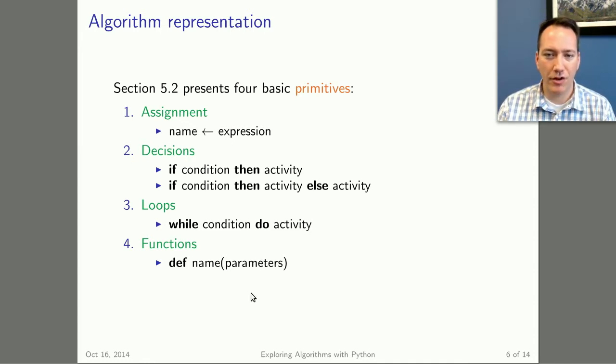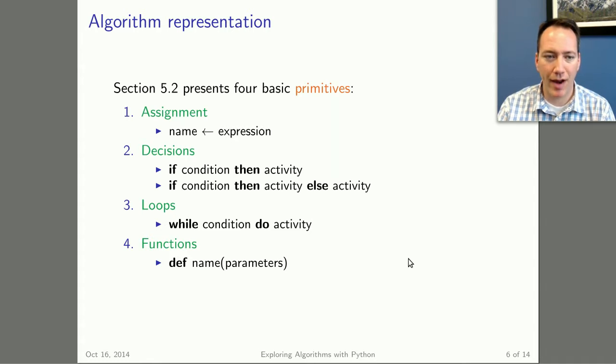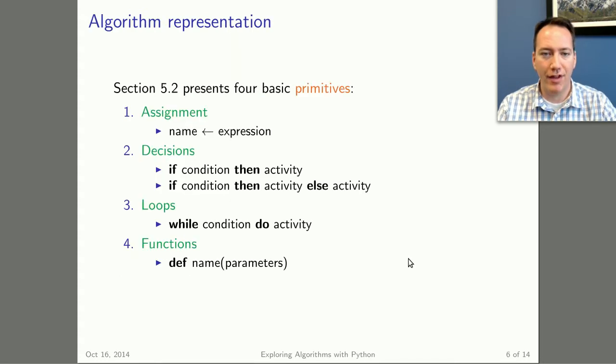And finally we have functions. Functions is when you give a bunch of code a name and you can give that function some optional parameters or data that's required to run the function. Just like in algebra, you usually have f of x. Of course, in programming we don't like to have single letter variable names, so you might have an entire name and parameters. So here's an example in Python that you should be able to understand at this point that uses all four of these primitives discussed in 5.2.